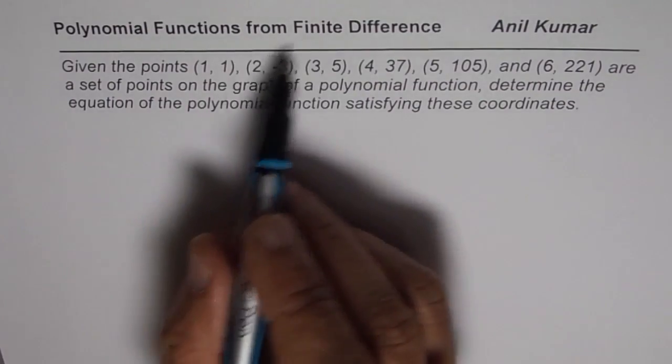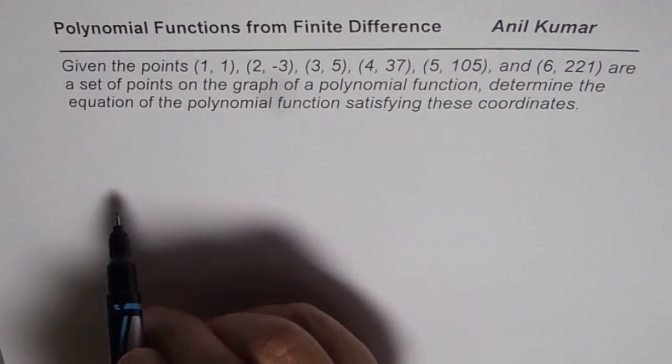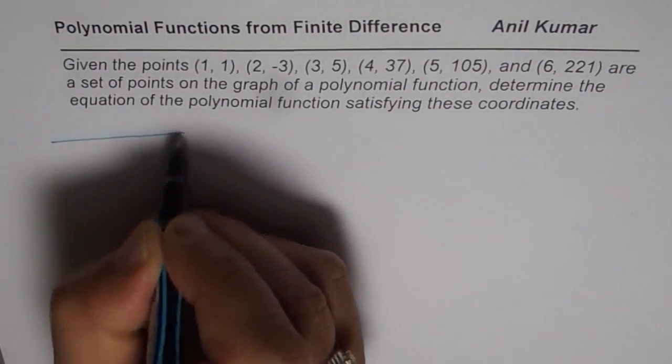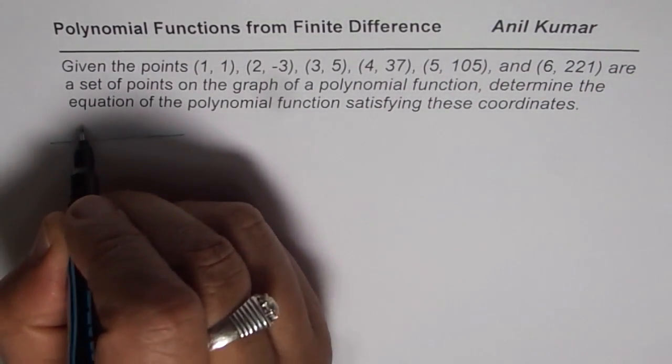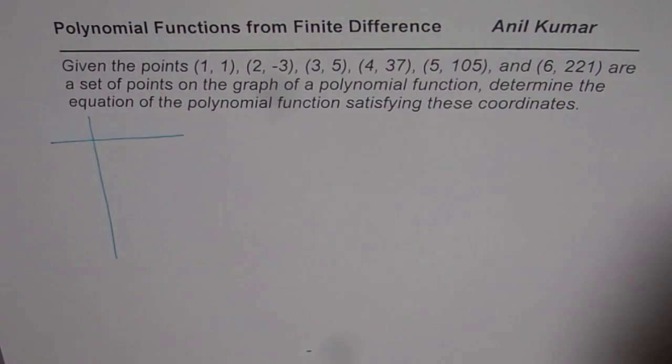Now we will use finite difference to first figure out what kind of polynomial we are working with. I will write down the points and then we will try to find the finite difference.